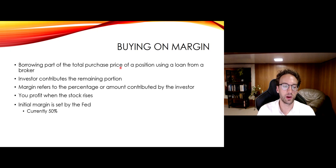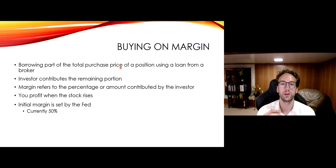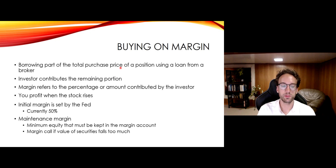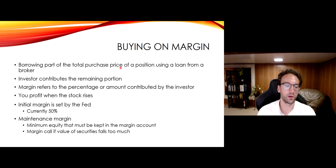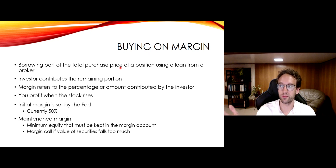The initial margin, set by I think the Federal Reserve — I'll check that and get back to you — is 50%. So when you get a position that you have to borrow money for, you have to have 50% of the position from your own equity. Maintenance margin is a minimum equity that must be kept just to maintain your position for that account. So if the value of the securities falls too much, your broker says we've got to liquidate these securities to make sure we get paid.